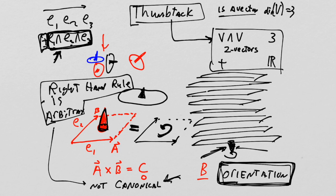We have our space-time manifold — our space in three dimensions — with a coordinate system. On that coordinate system we create vector spaces at every point using the coordinate basis, and we've chosen an orientation. When I invoke the right-hand rule I realize it's arbitrary and non-canonical, but I'm presuming we have an oriented manifold. Once we do, everything is okay.